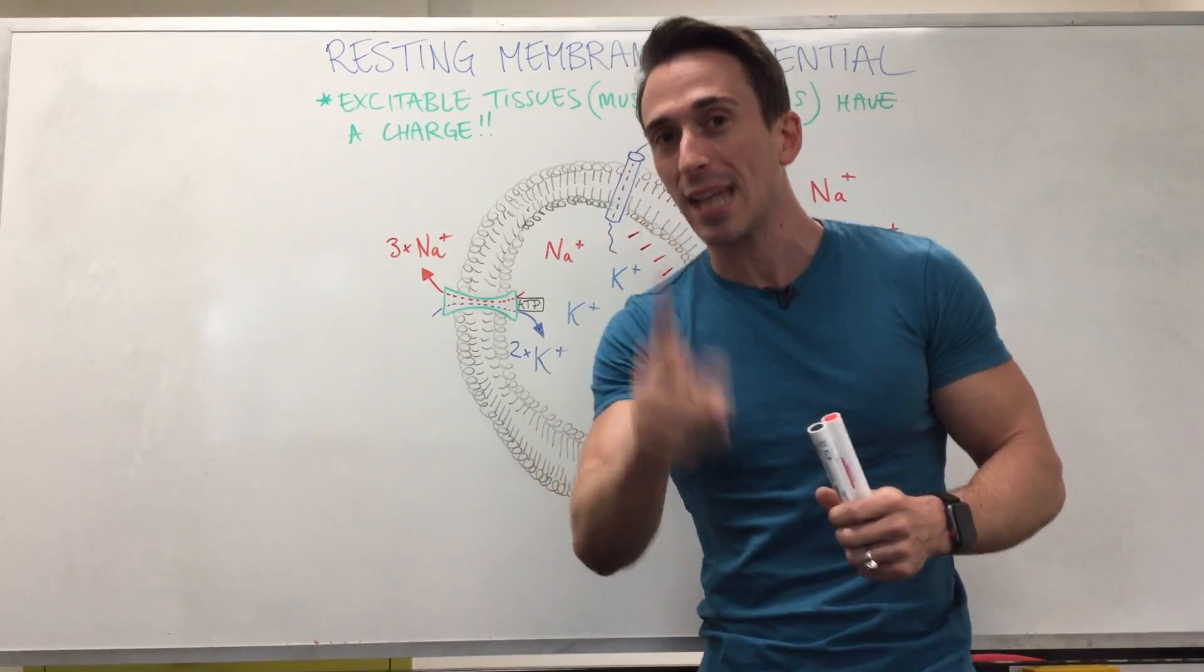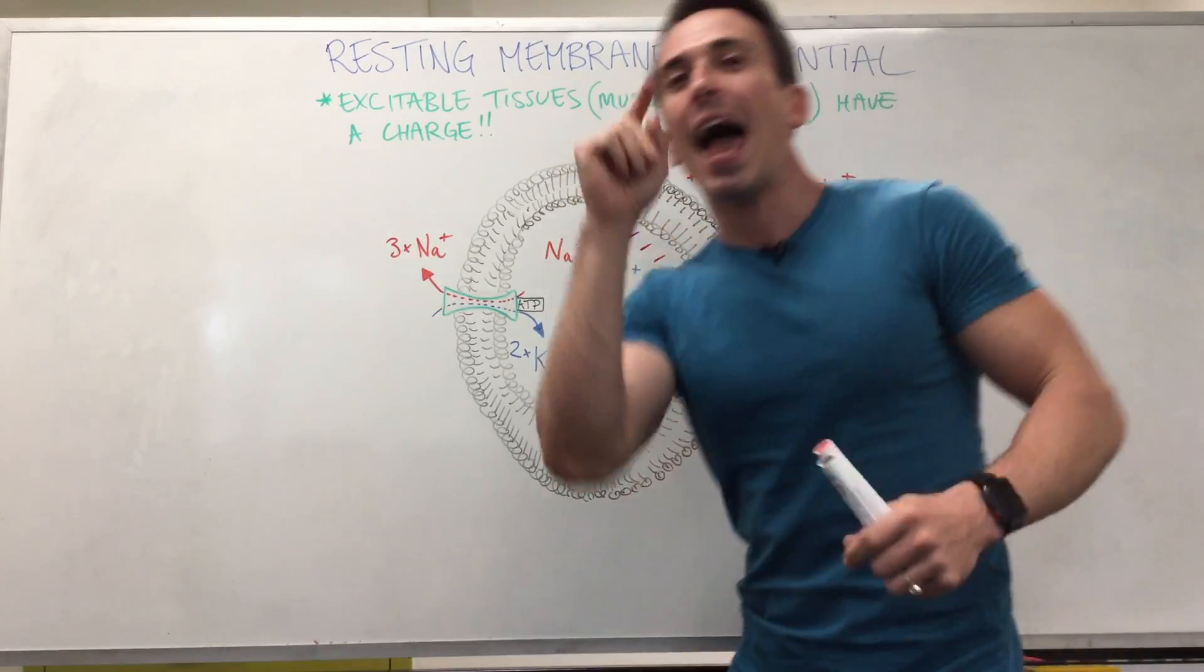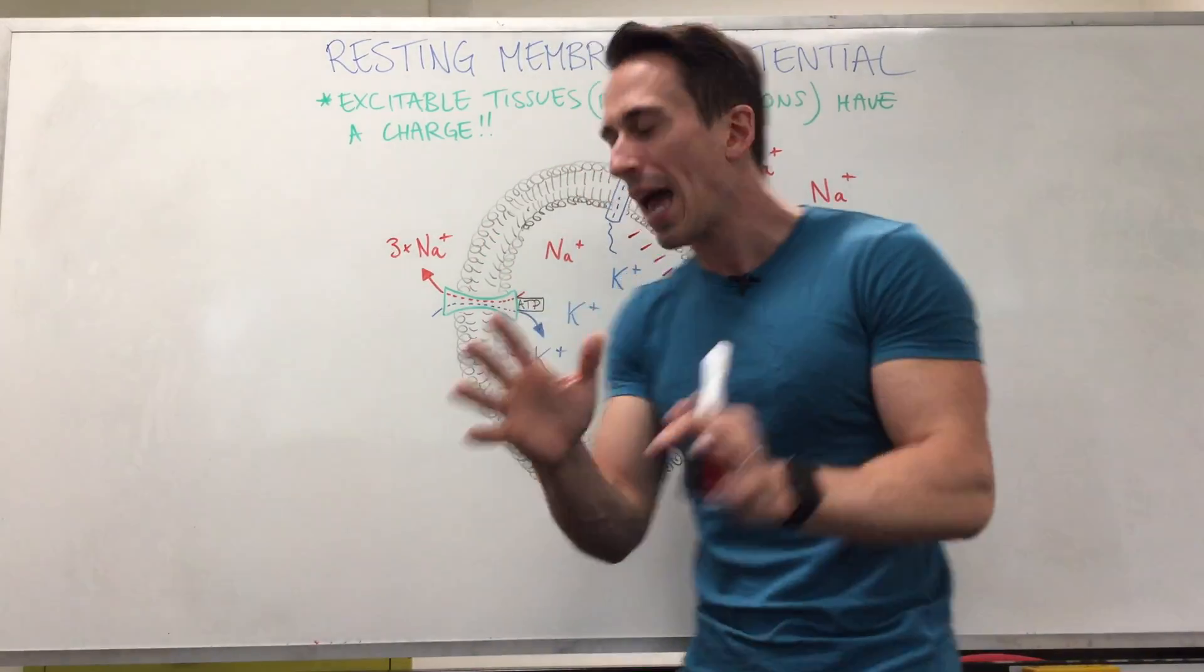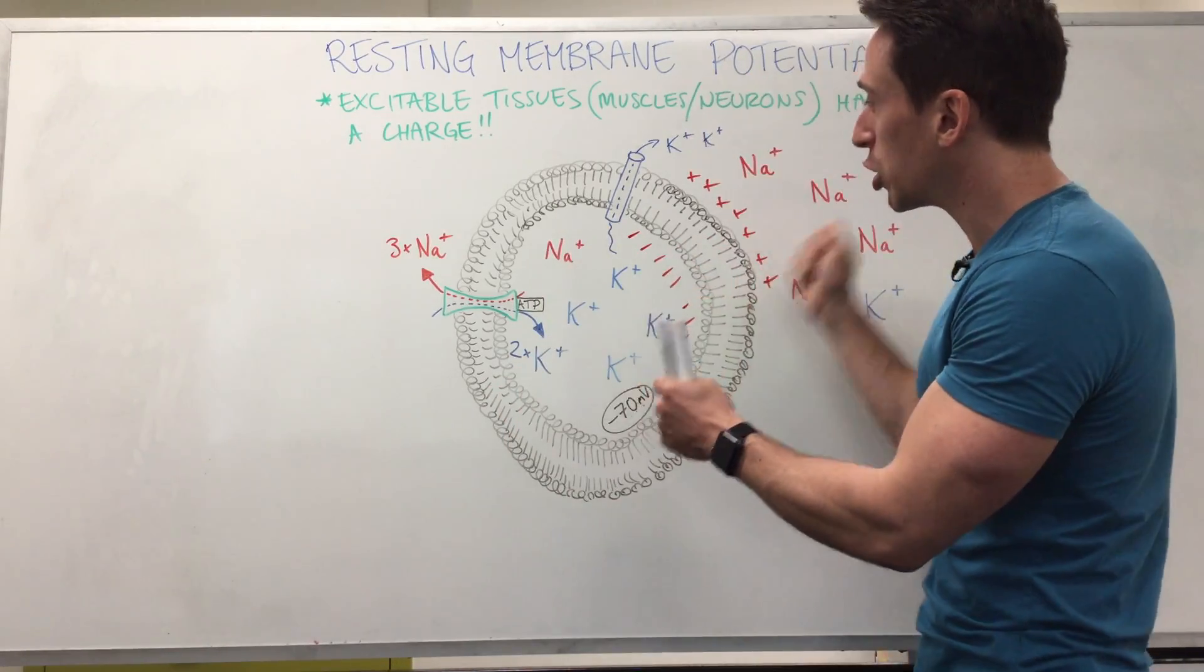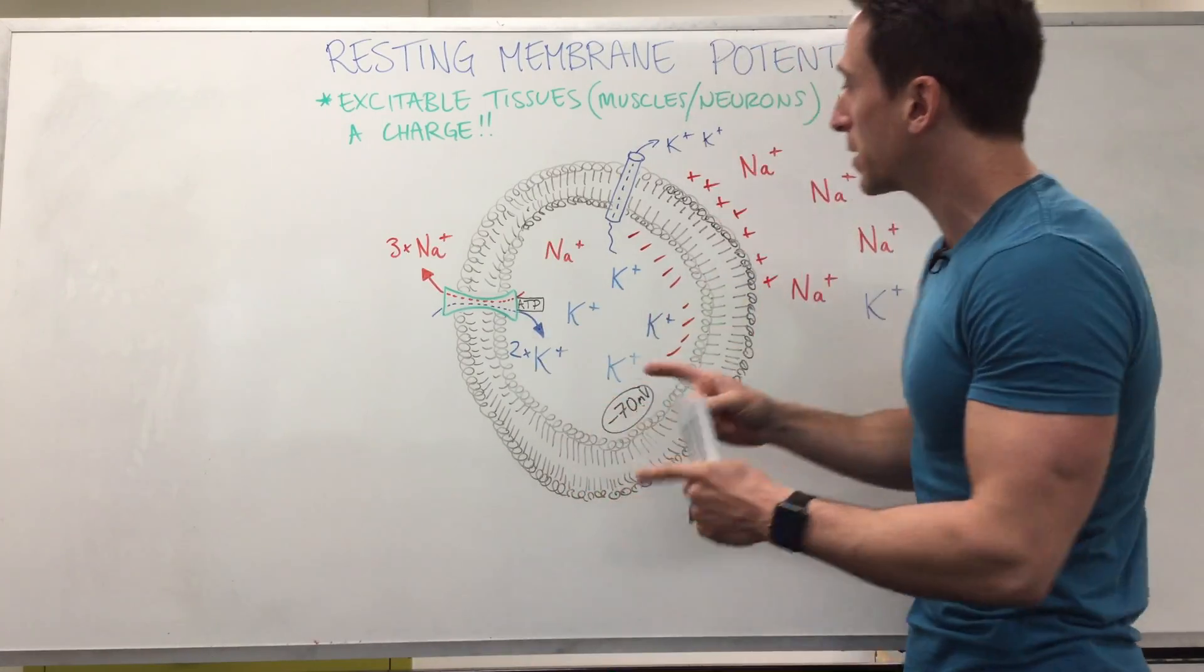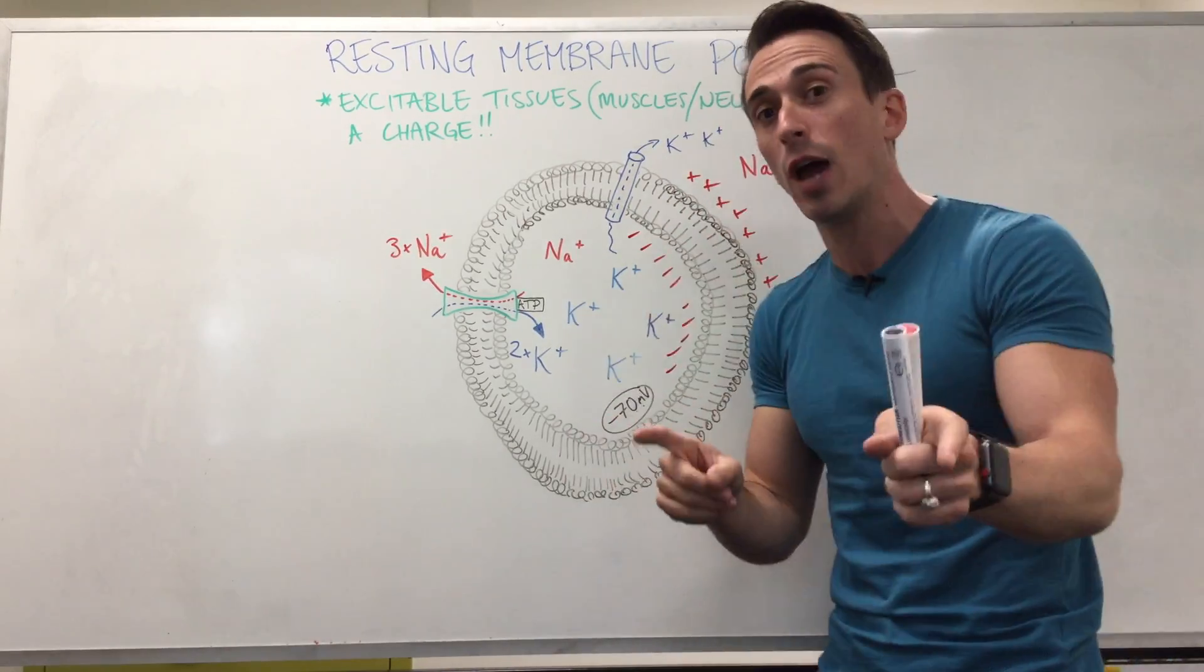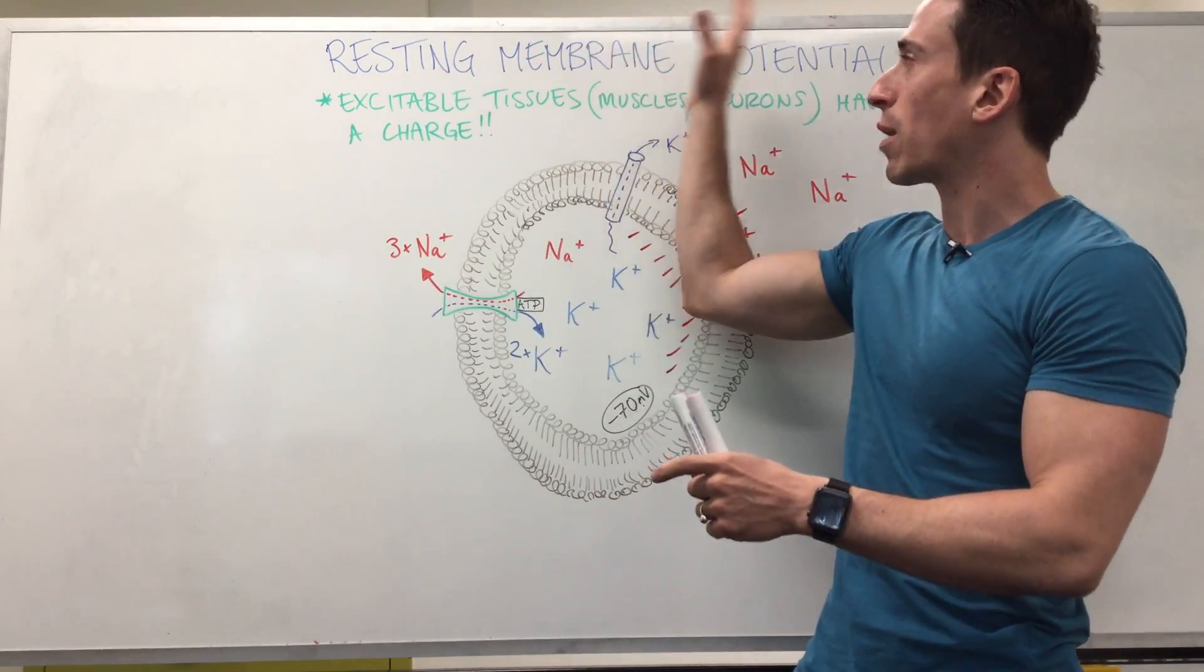Now this is important because now what we've established is an electrical gradient from outside to in and a chemical gradient from outside to in. And this is termed the electrochemical gradient. Now what we now have is a potential for change. The potential is that we can change the charge. So there's a potential there for charge to change and the potential is for the concentration to change. In actual fact, if we change the concentration of positive things inside and out, it's going to affect the charge. And this is called the resting membrane potential.